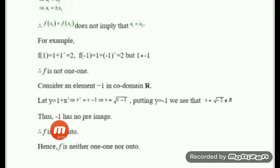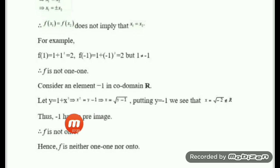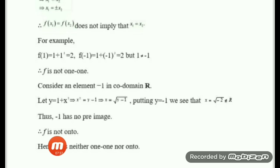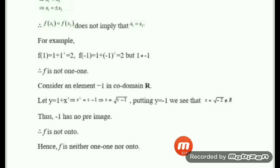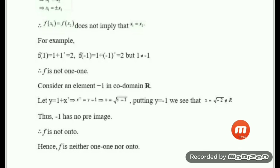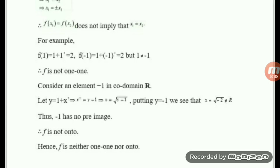The conclusion is that minus 1 has no pre-image, hence the function is not onto. Since f is neither one-to-one nor onto, therefore f is not bijective. I hope you understand the solution.